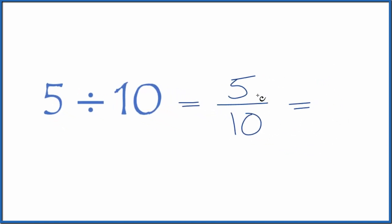And we can simplify this because 5 goes into 5 and 10. So 5 divided by 5 is 1. 10 divided by 5 is 2. So we have 1 half.